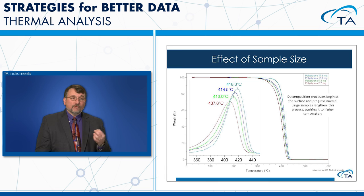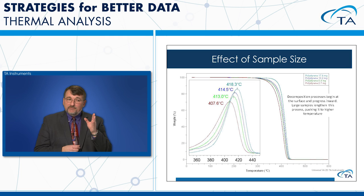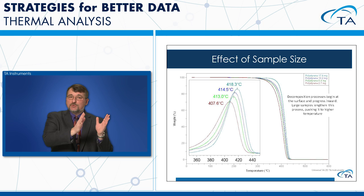An example with polyethylene ranging from 2.7 to 17.6 mg run at 10°C/min shows a shift of about 10°C in TGA curves and derivative peak position as sample mass increases. Going to bigger samples shifts transitions to higher temperatures — something to be aware of when interpreting results.